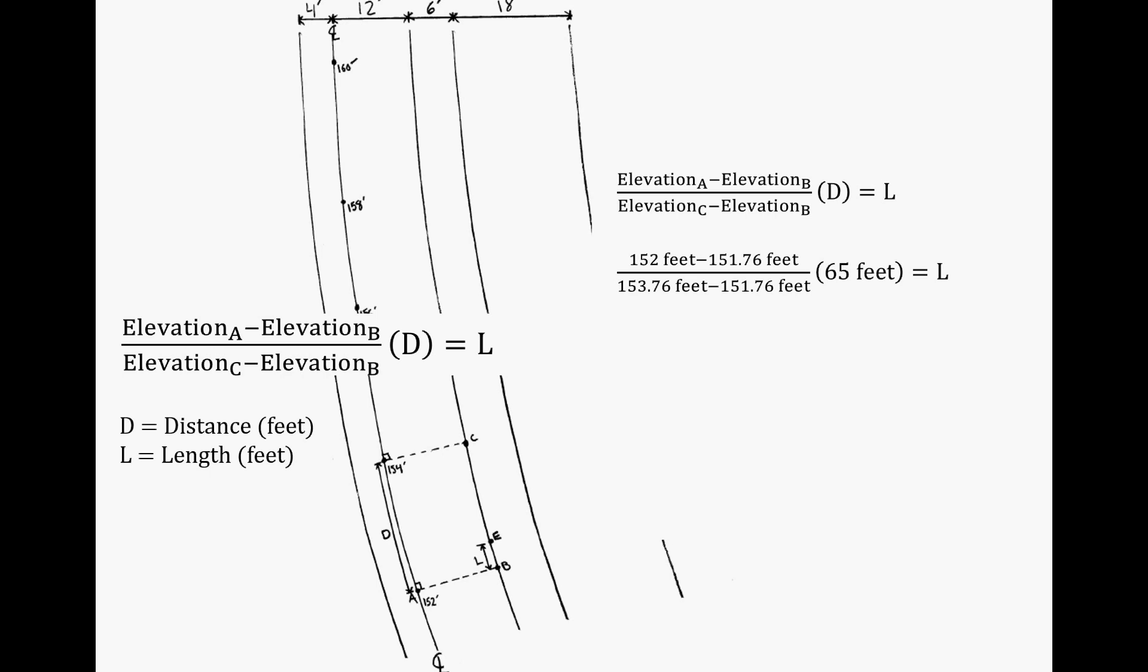We multiply that by 65 feet, the distance D. That gives us an L of 7.8 feet, or approximately 8 feet. Now the line can be drawn that connects A and E for our contour.